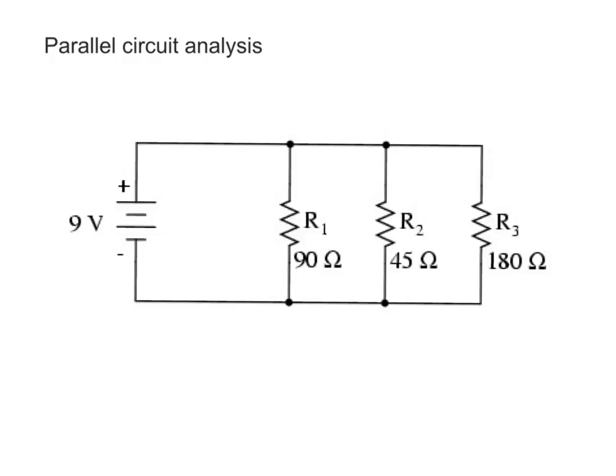So what I'm going to do here is trace the current and see what happens. I'm going to start with conventional current, start at the battery, and trace it around. And now I hit this spot right here, the spot that we're going to call a node, also known as a junction.